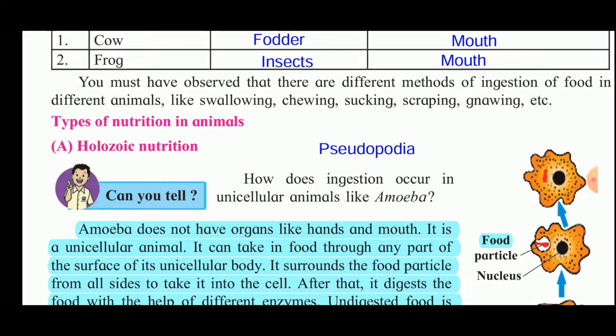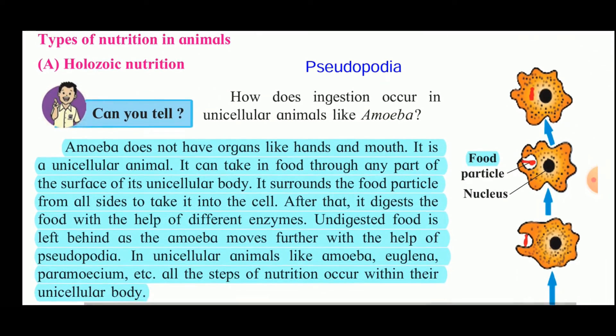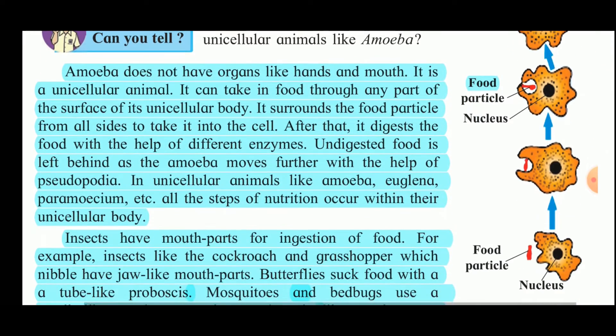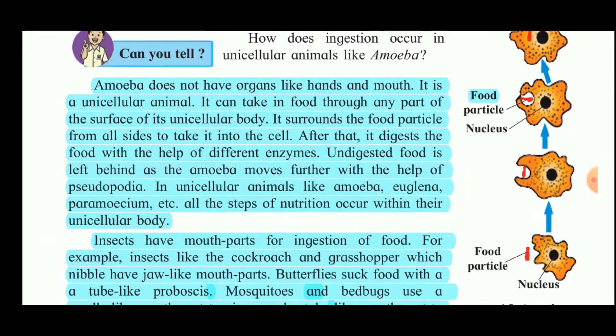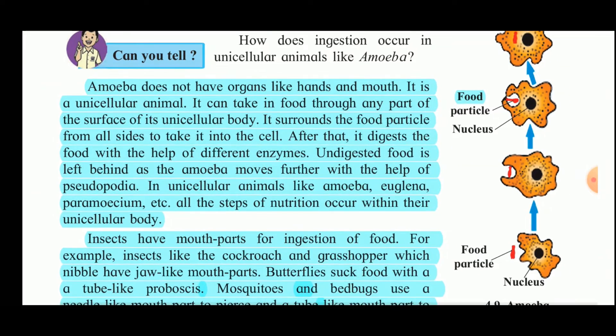The different types of nutrition in animals — the first one is holozoic nutrition. We will first see how ingestion occurs in unicellular animals like amoeba. With the help of this picture, it will be more clear.